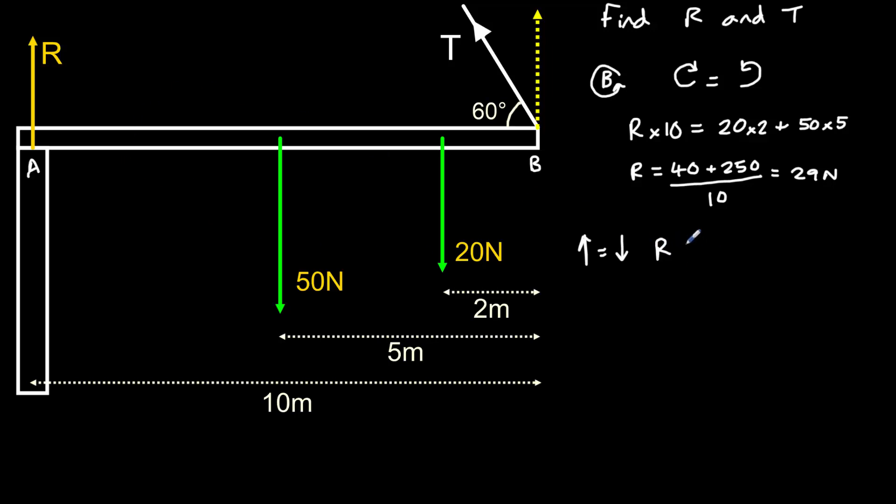So let's begin by listing all the upward forces on the left-hand side of our equation. So we have R, which we know to be 29 Newtons, plus the vertical component of this tension T, which will be T sine 60 degrees, and that will be equal to the sum of these two forces, 50 plus 20. So let's clean that up a little bit. So we have R that is 29, plus T sine 60 is equal to 70. So we can rearrange that to get T equals 70 minus 29 divided by sine 60, which gives us an answer for T of 47.3 Newtons.